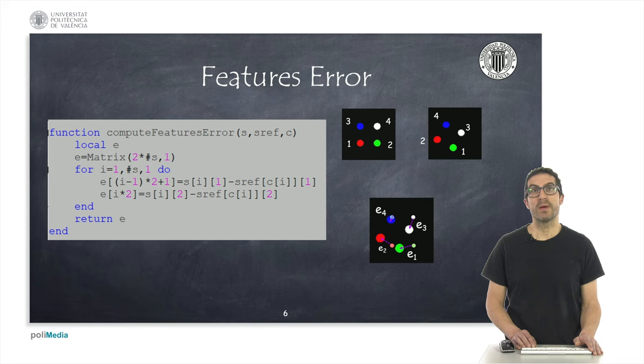The error in the feature is a vector with twice as many elements as the number of features we have detected, since the error vector includes errors in x and y coordinates of each feature, in a column form. For the example shown, the error vector is a vector with eight elements.